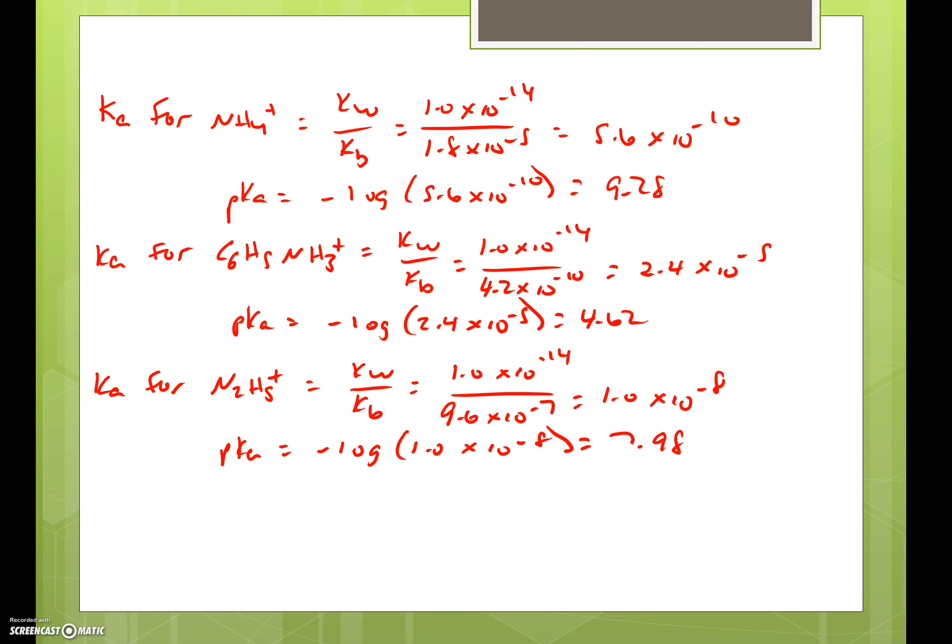If we take our last option and calculate the Ka for N2H5 plus, we take the Kw, divide it by the Kb value, and we get 1.0 times 10 to the minus 8. If we take the negative log of that value, we get 7.98.